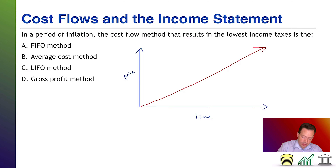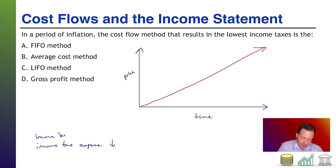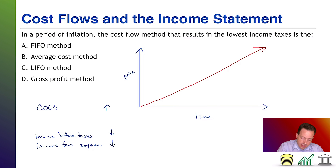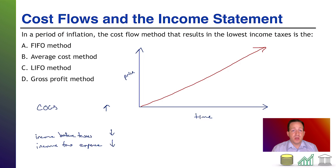For income tax expense to be low, your income before taxes also needs to be low. In terms of cost of goods sold — which is what we're dealing with in this topic — for income before taxes to be low, your expenses have to be higher. Specifically, your COGS needs to be higher. High COGS leads to low income before taxes, which leads to low income taxes.